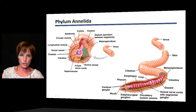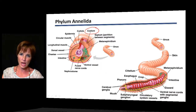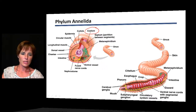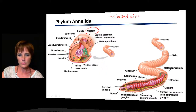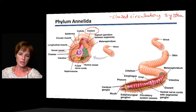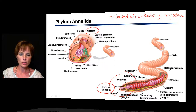Looking at the internal structure of an earthworm — an oligochaete — they have a true coelom to protect the organs and aid movement. They also have a closed circulatory system, with vessels containing the blood. There is a head structure with a cerebral ganglia, which is a simple brain, and nerve cords running throughout the body.